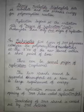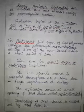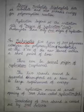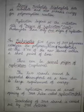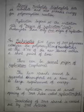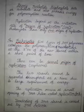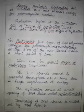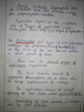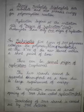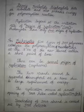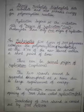The origin of replication is the site where replication is initiated — it is called the 'ori'. In prokaryotes there is only one origin of replication.